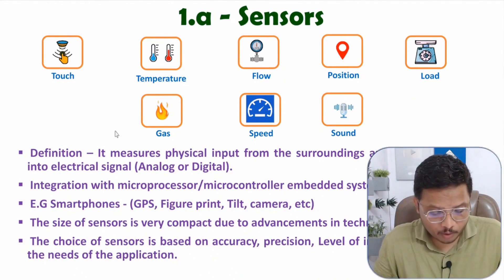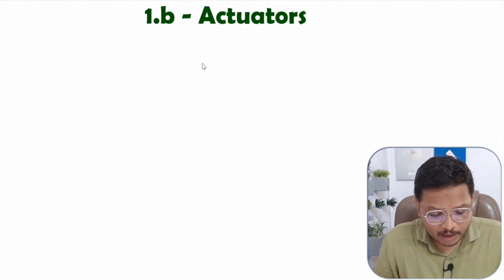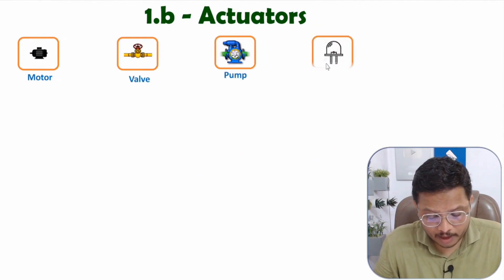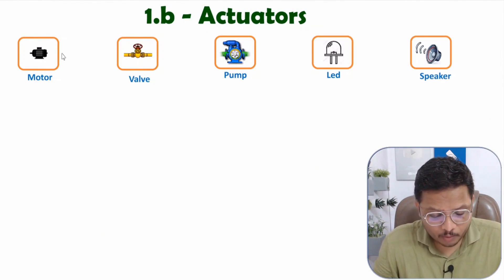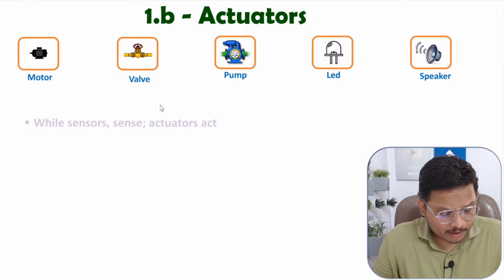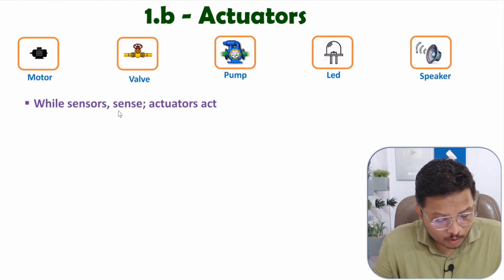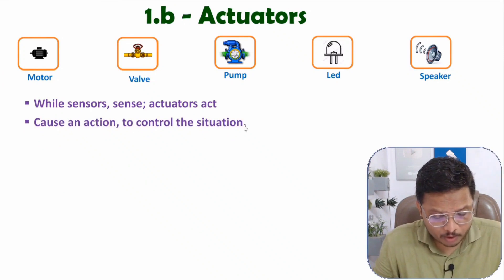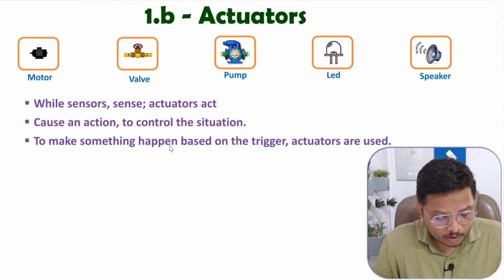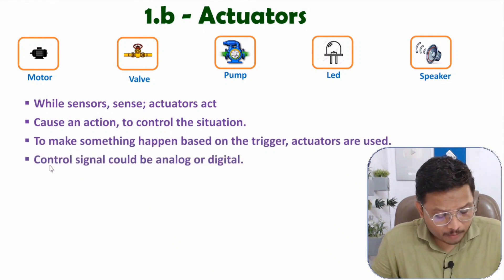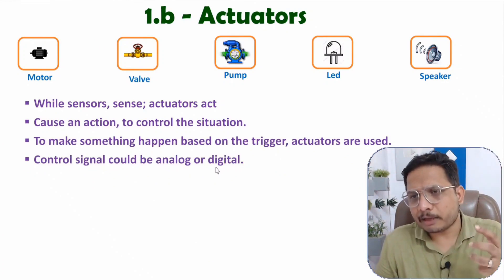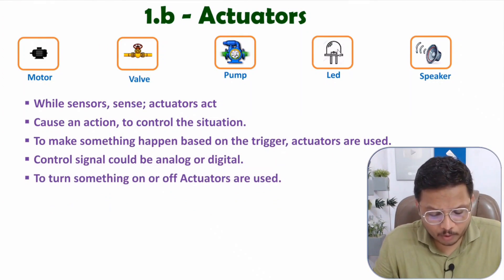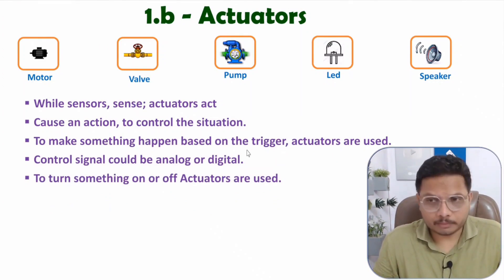Actuators are based on how we provide physical output. Some examples include a motor, a valve, a pump, an LED, or a speaker. Sensors are used to sense various physical entities in the environment, and actuators are used to act upon these entities — causing action and effectively controlling the situation to ensure the desired outcome. Actuators are triggered by a control signal that can be analog or digital, and are used to turn something on or off.